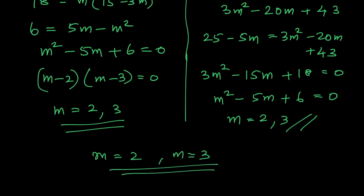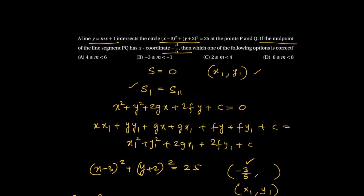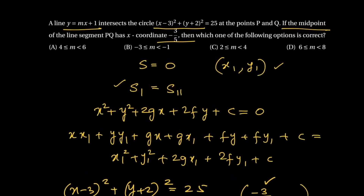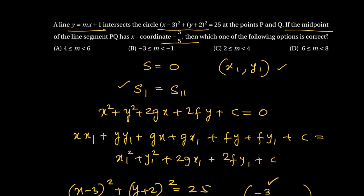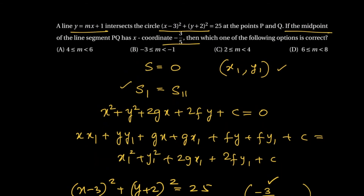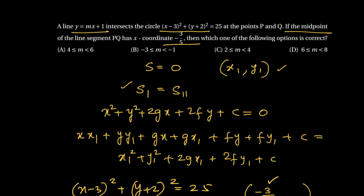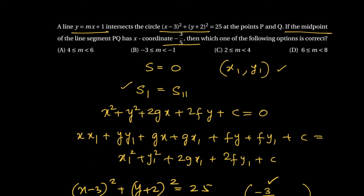We have found the exact values of m, but the options talk about the range in which the values of m lie. The answer is they lie between 2 and 4.